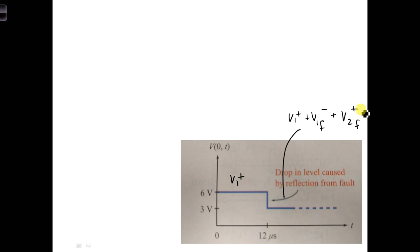Since RG is equal to Z naught, the generator is matched to the transmission line, then we know that V2F plus is equal to 0. You can find that from determining the voltage reflection coefficient at the generator. As a result, we have 3 volts, because that's the level from our plot that we get at 12 microseconds.